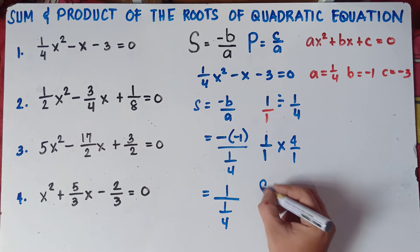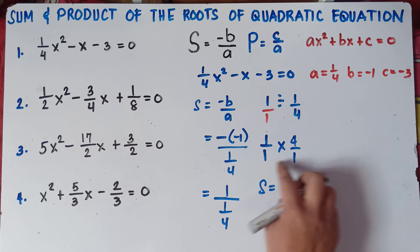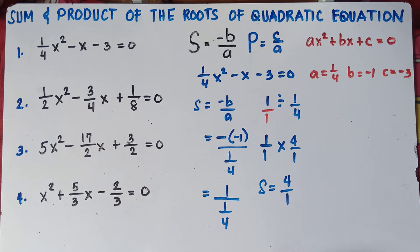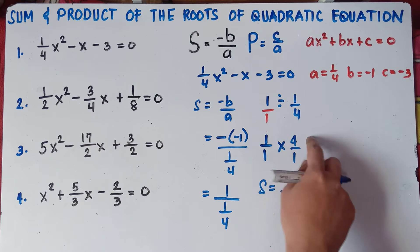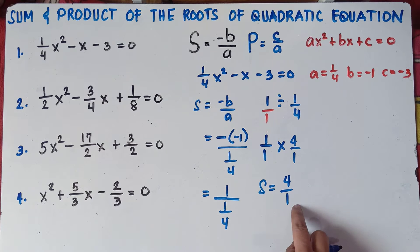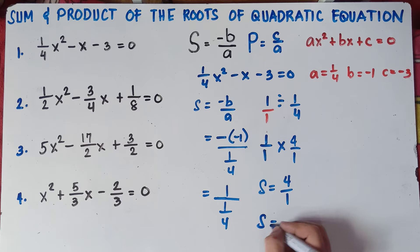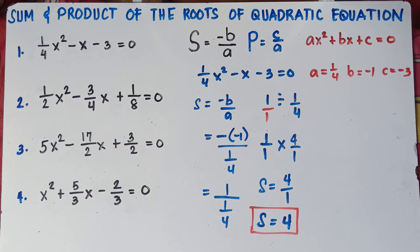Multiply the numerators: 1 times 4 is 4. Multiply the denominators: 1 times 1 is 1. So we get 4 over 1. Can we divide 4 by 1? Yes. So 4 divided by 1 is 4. The sum for number 1 is 4.